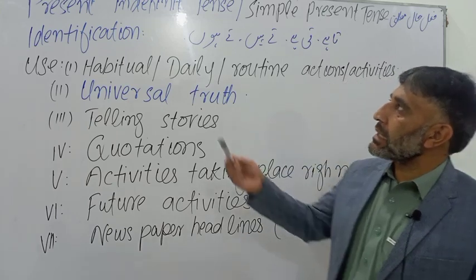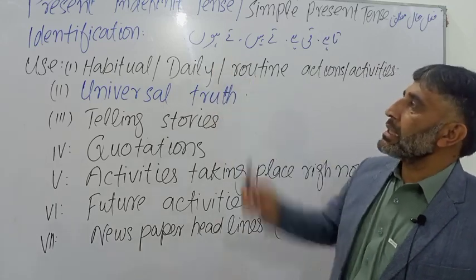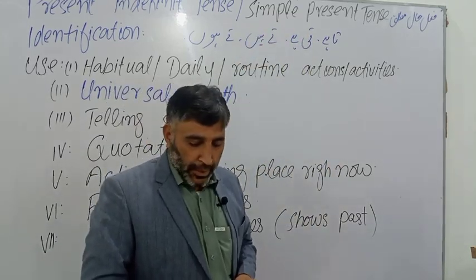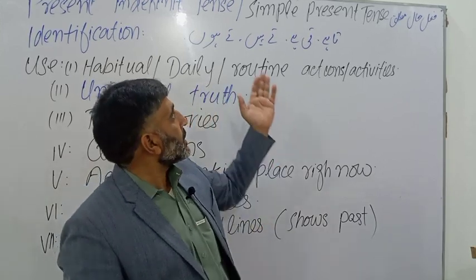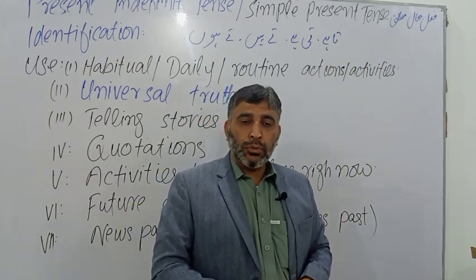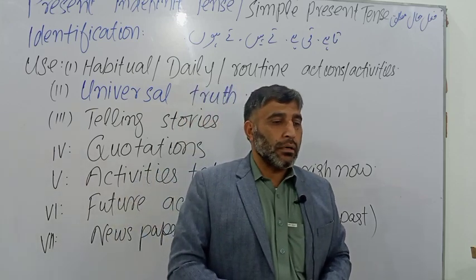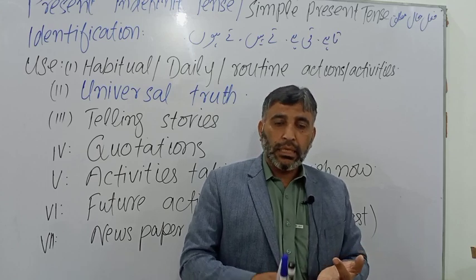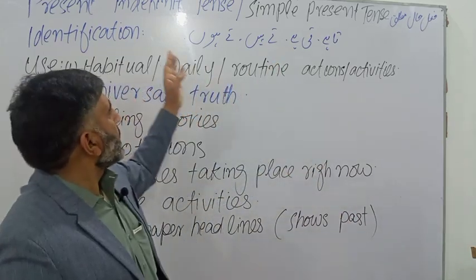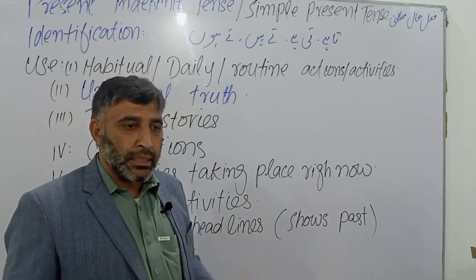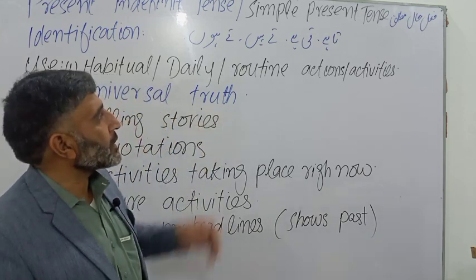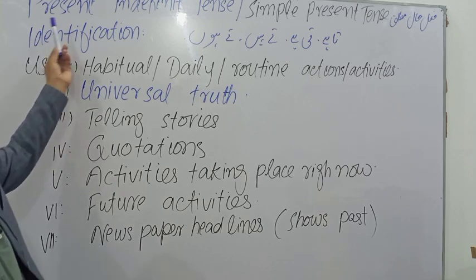Today we will begin the present indefinite tense — also called simple present tense. Its Urdu meaning is 'Pehlihal Mutlaq'. There are three independent tenses, three continuous tenses, three perfect tenses, and three perfect continuous tenses. After present independent tense, we will discuss past independent tense ('Pehli Mazhi Mutlaq') and then future independent tense ('Pehli Mustaqbal Mutlaq').